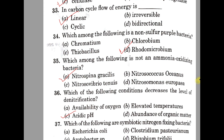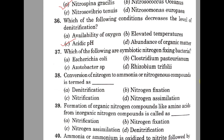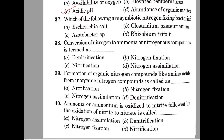Question number 37. Which of the following are symbiotic nitrogen-fixing bacteria? A: E. coli, B: Clostridium pasteurianum, C: Azotobacter, D: Rhizobium trifolii. The correct one is D, Rhizobium trifolii. Rhizobium is a gram-negative bacteria present in the root nodules of leguminous plants.